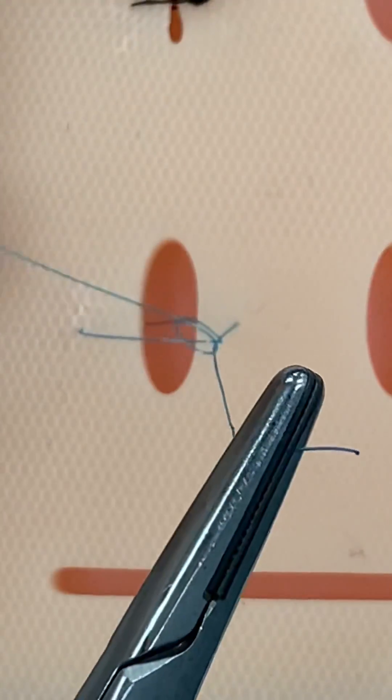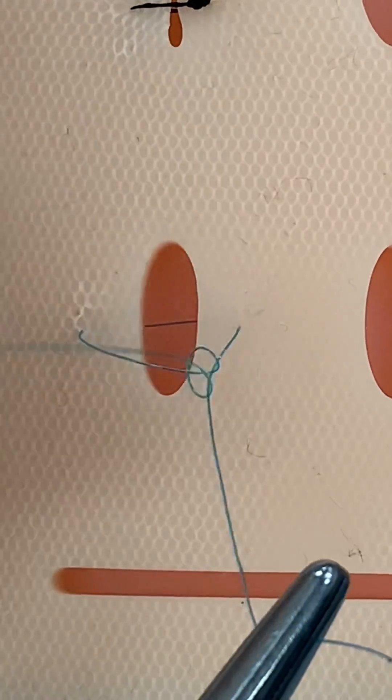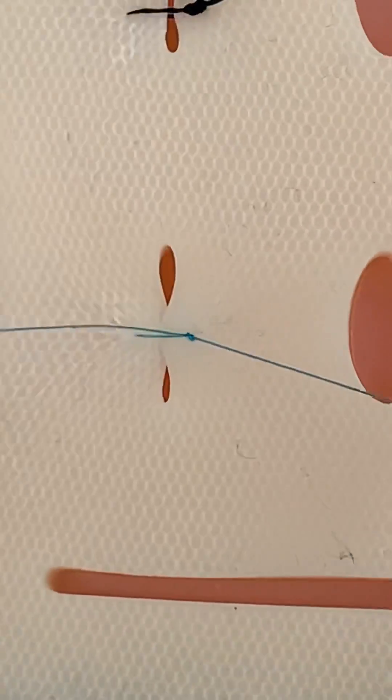Take sliding knots for example. You can make a very simple one by loosely tying a square knot and pulling on the ends at a 90 degree angle.